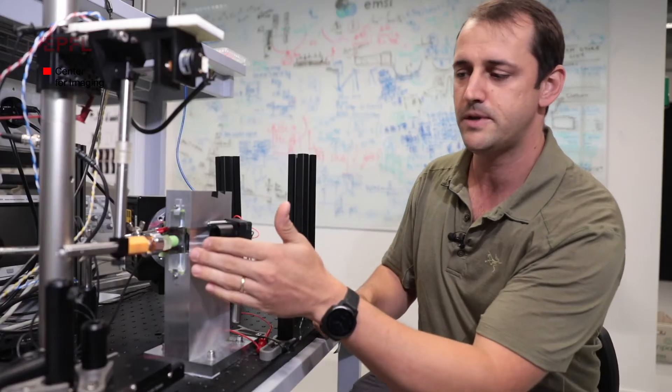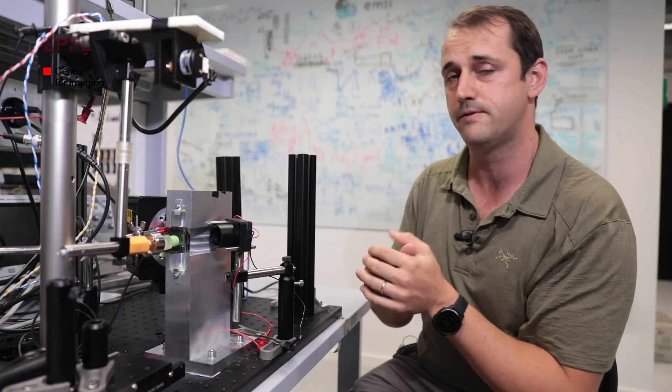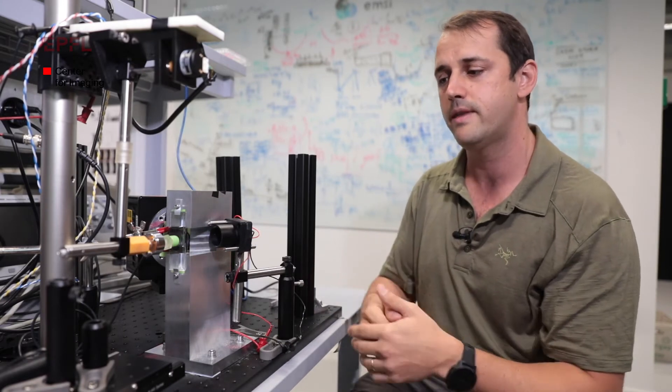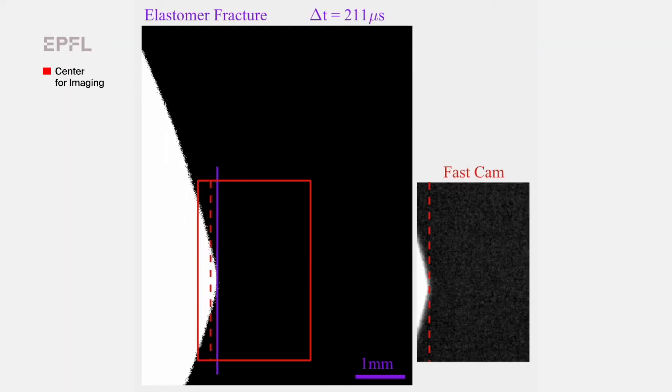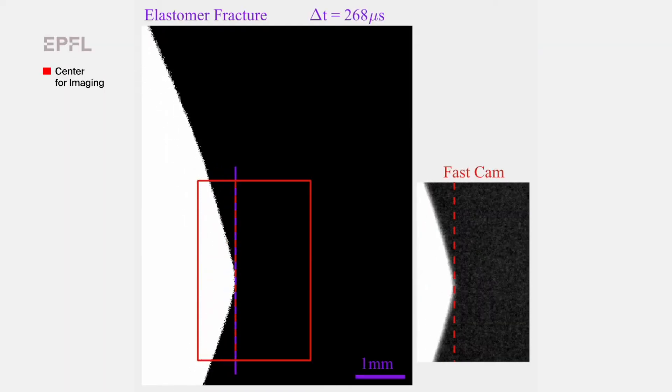So what can happen there is that the air can be so compressed that it deforms the elastomer. And with this imaging modality, which is based on the principle of total internal reflection, we can then characterize the deformation of the solid, the space that's comprised of the air in between the elastomer and the glass.